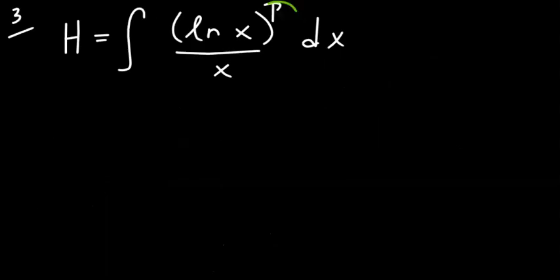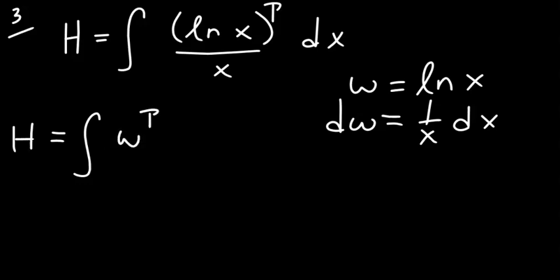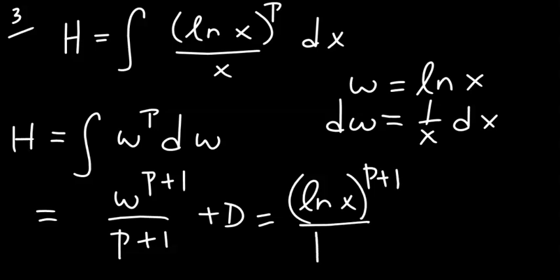Now what about the integral with (ln(x))^p over x, where p is a constant? We can use the same substitution: set w to be natural log of x, so dw is 1 over x dx. Rewriting the integral in terms of w gives w^p dw, which integrates to w^(p+1) over (p+1) plus a constant. Substituting back, the answer is (ln(x))^(p+1) over (p+1) plus the integration constant.